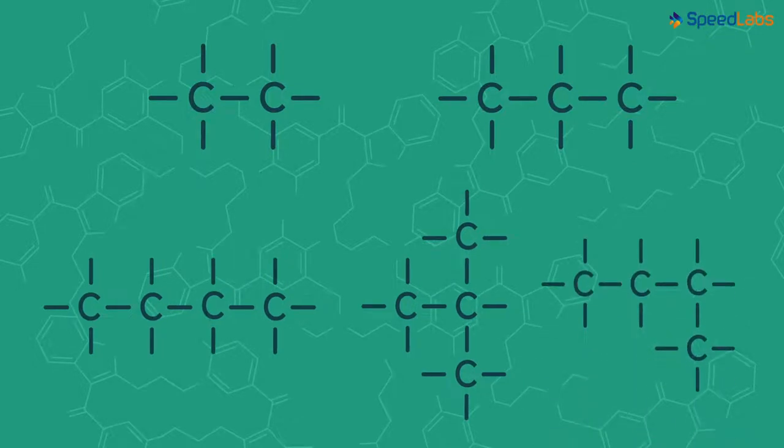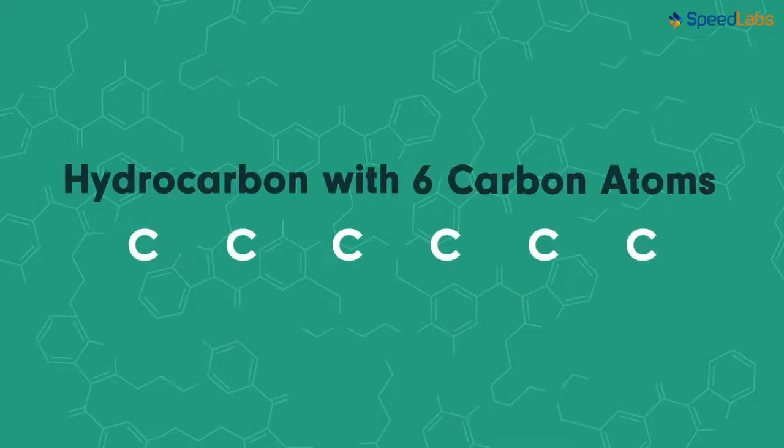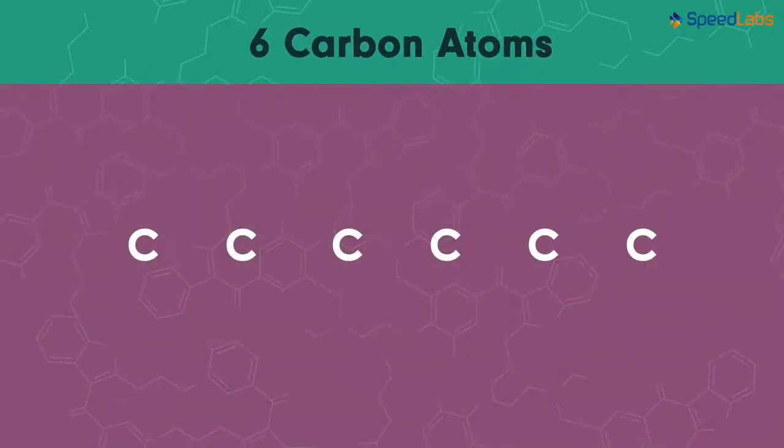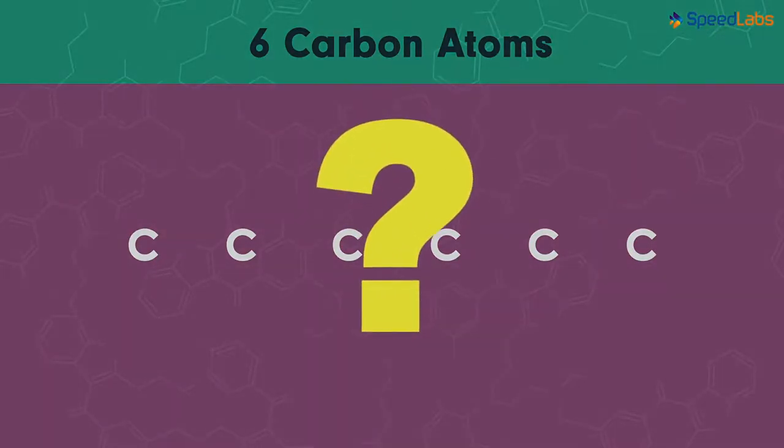To understand this, let's take a simple example of a hydrocarbon with six carbon atoms. For now, let's not look into whether it's an alkane, alkene or alkyne. Let's just focus on the number of carbon atoms. Now, tell me how will the chain be arranged?